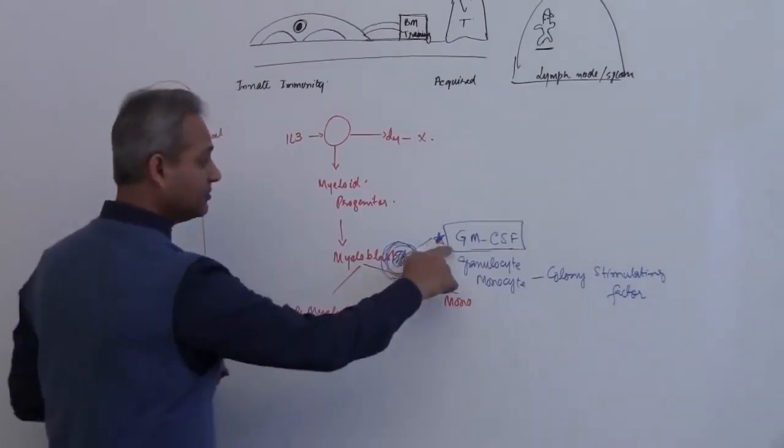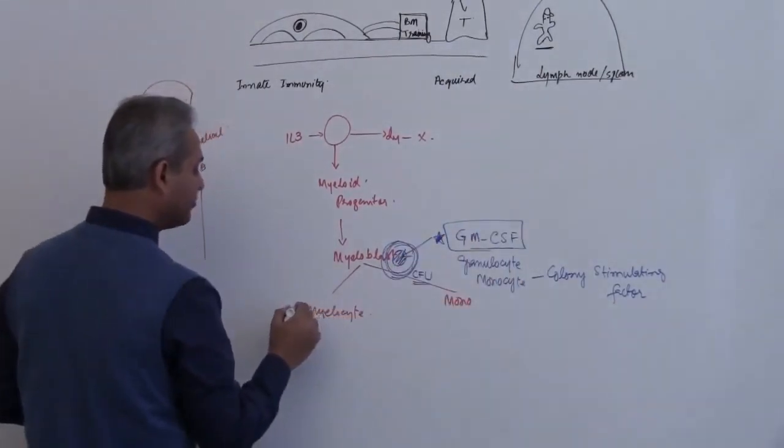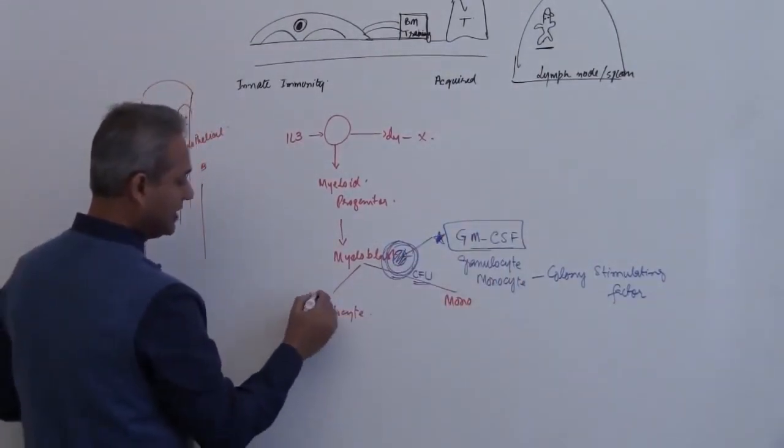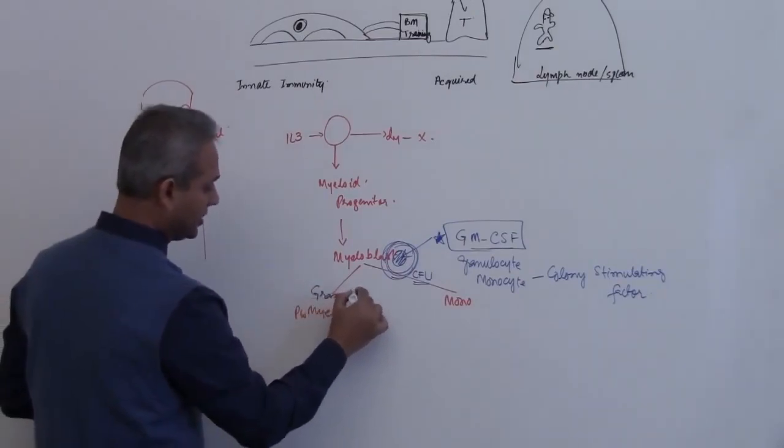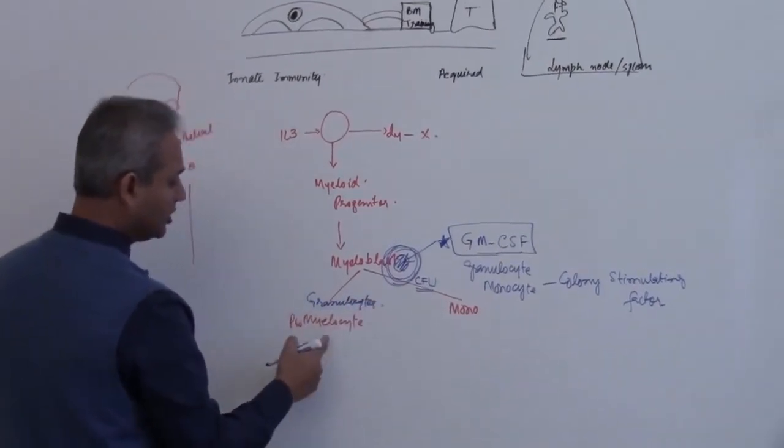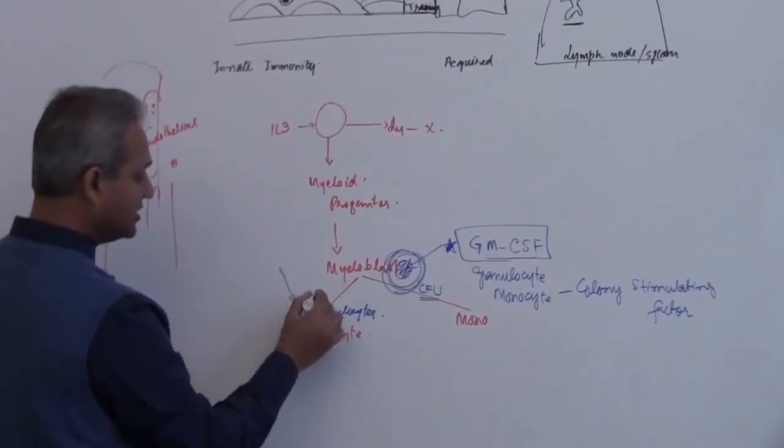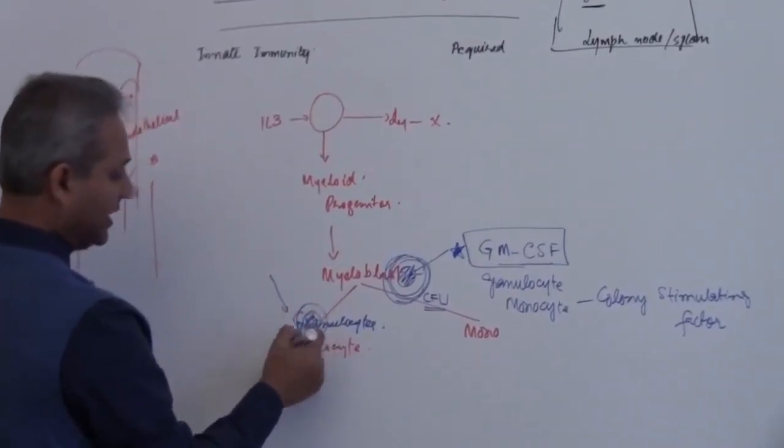Then, so we have GM-CSF. Then we have, what do you think, what is this? This is granulocytes. Granulocytes, colony stimulating factor. So if something only stimulates these cells here and their production.